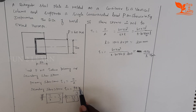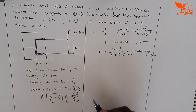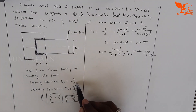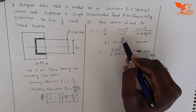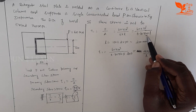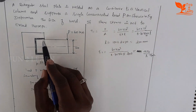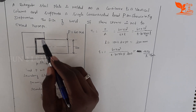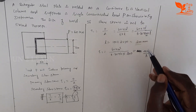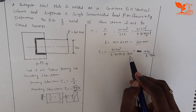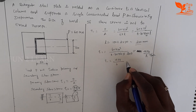For primary shear τ₁, the formula is Load divided by Area. The throat area is t × L, where t = 0.707H and L is the total weld length. The lengths are 50mm, 100mm, and 50mm, giving a total L = 200mm. So τ₁ = (16×10³) / (0.707H × 200) = 424/H N/mm².